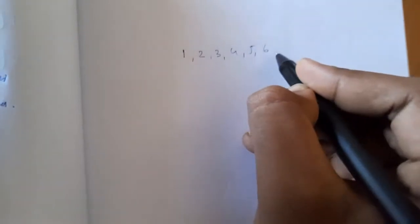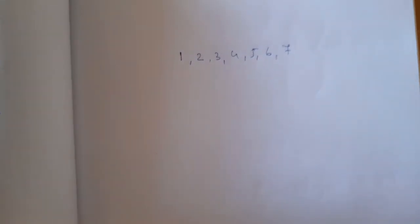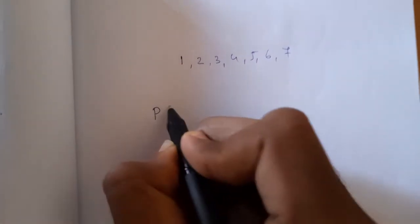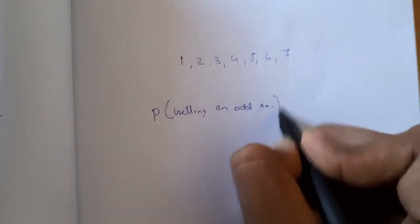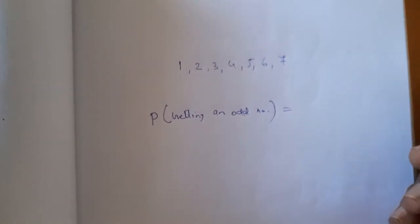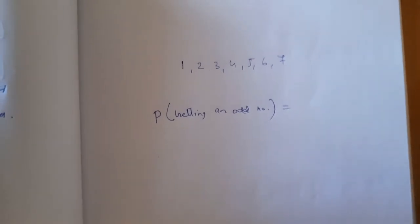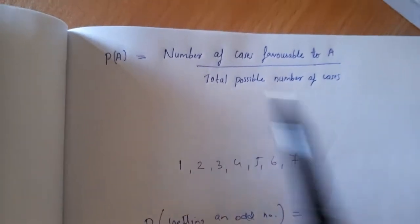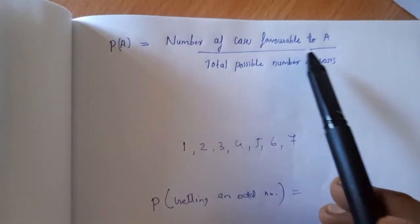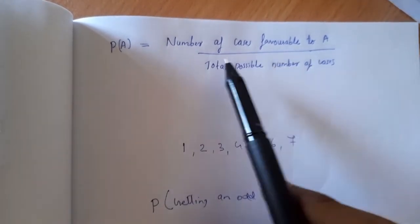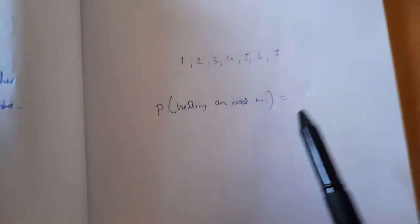First question: the numbers are 1, 2, 3, 4, 5, 6, 8 — that is 7 natural numbers. We are going to study the probability of getting an odd number. The formula is: probability of an event equals the number of favorable cases divided by the total possible number of cases.